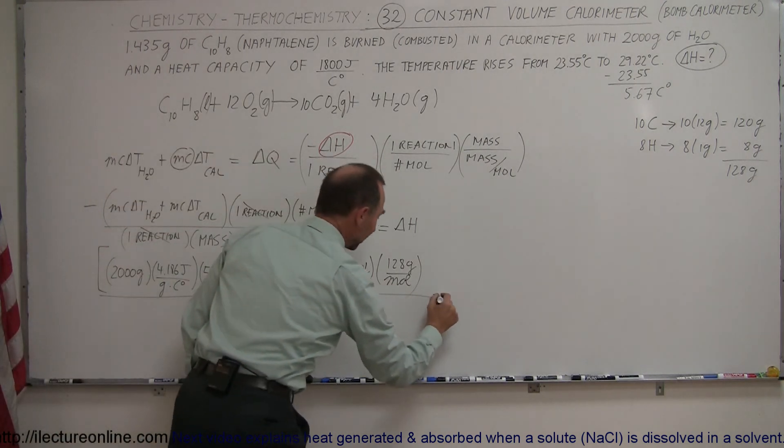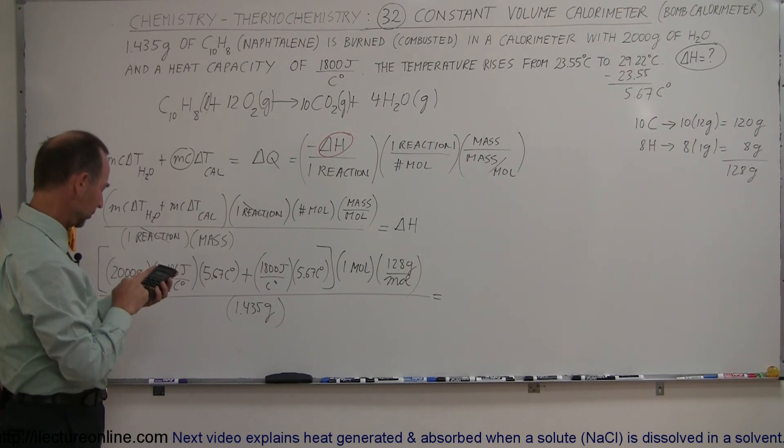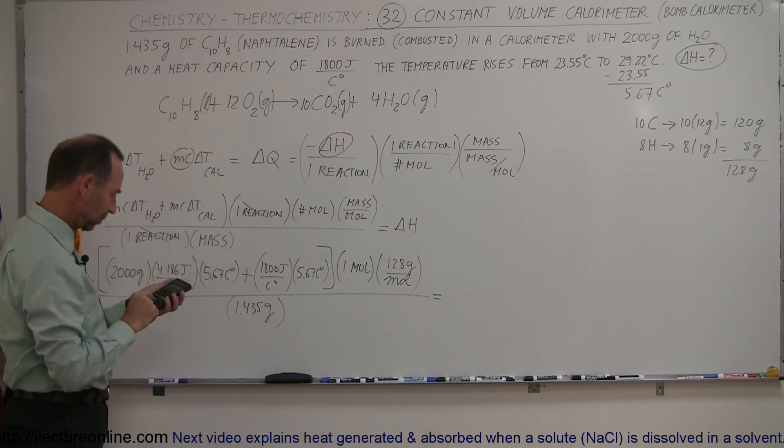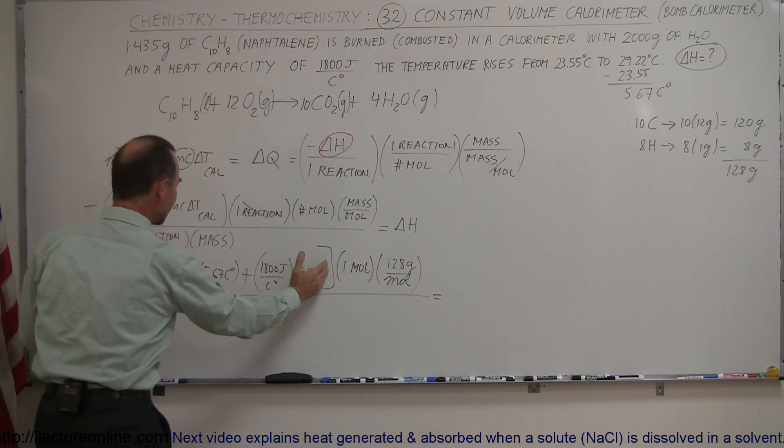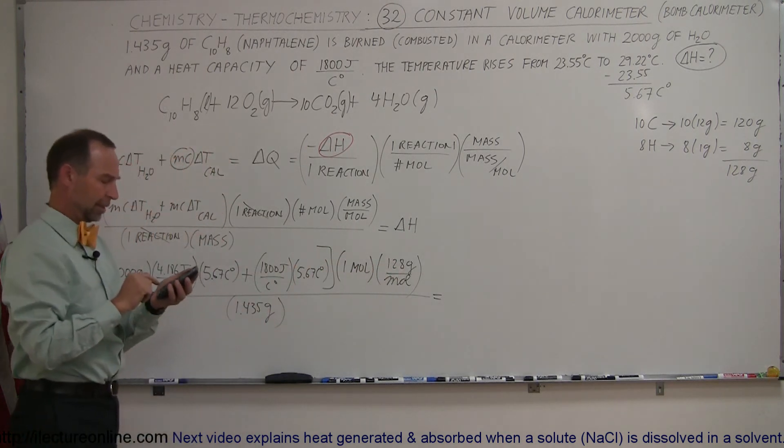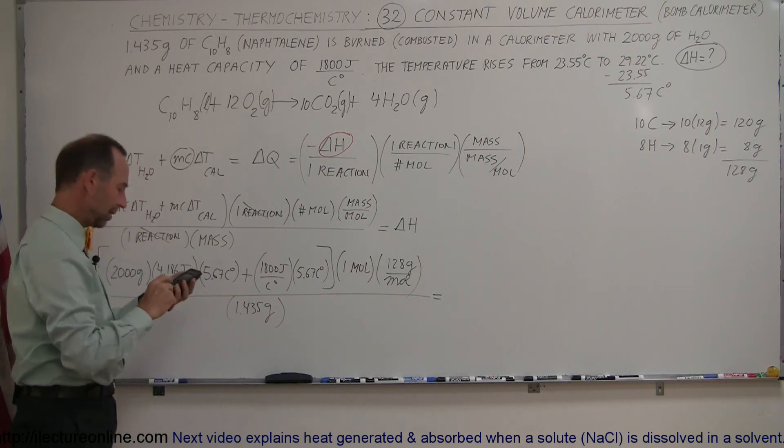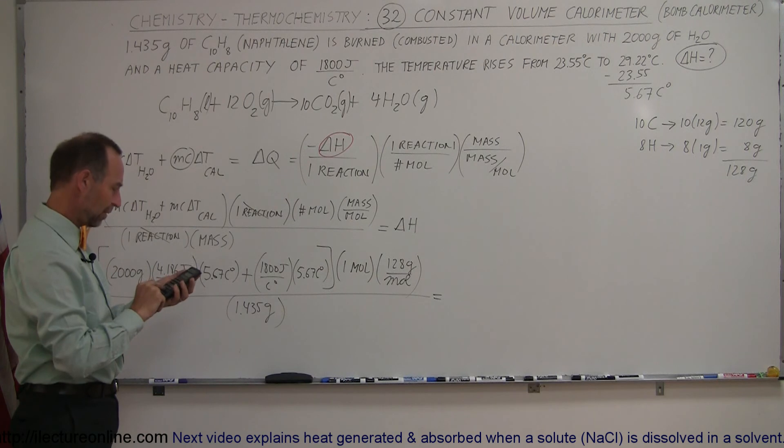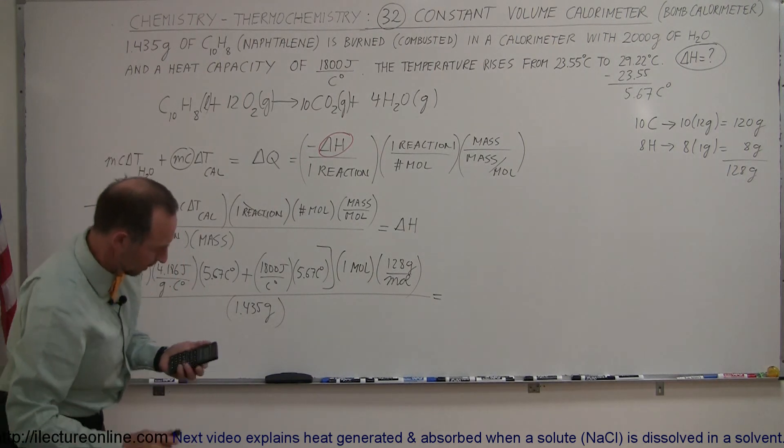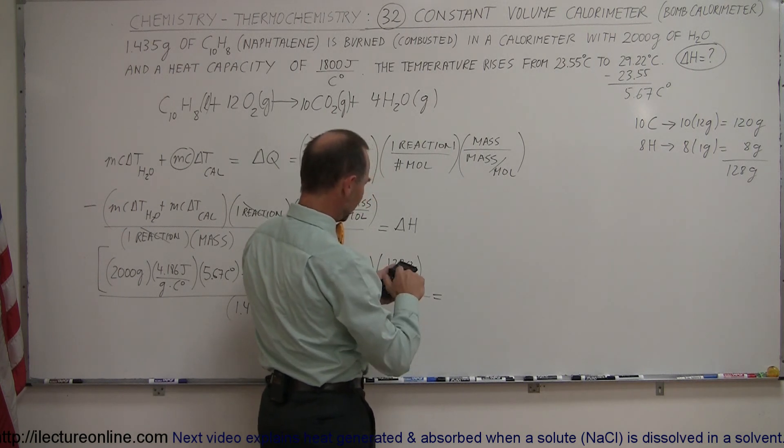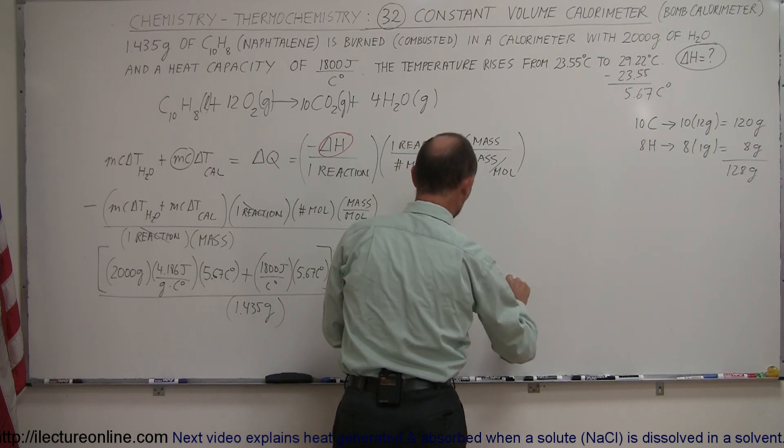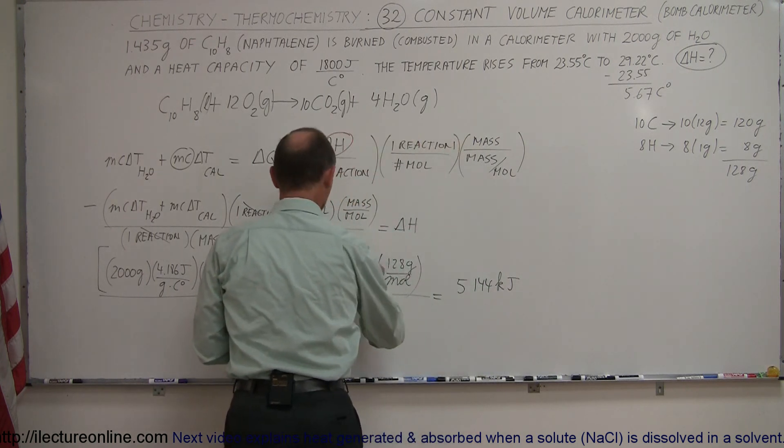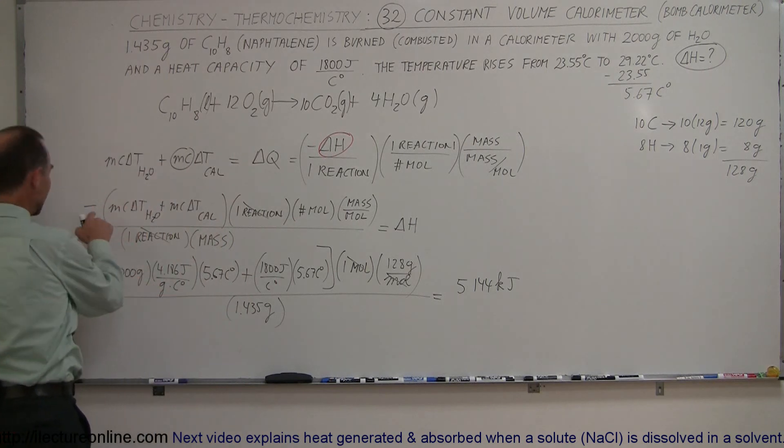Now we're ready to calculate our delta H. So 2,000 times 4.186 times 5.67 equals that. We're going to add that, so plus 1,800 times 5.67 equals. So now we have all the heat gained by the water in the calorimeter times 128 grams per mole, and then divide by the amount of the sample, divide by 1.435 equals. And so we have, wow, that's an awful lot, so that's 5,144 kilojoules. Mole cancels out, so that would be per reaction. Now don't forget, we have a minus in front of here.